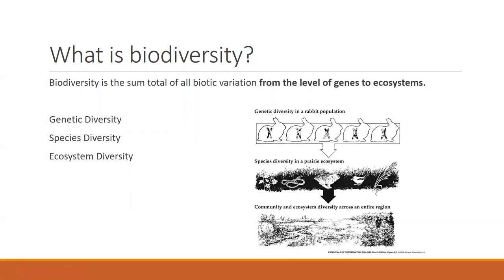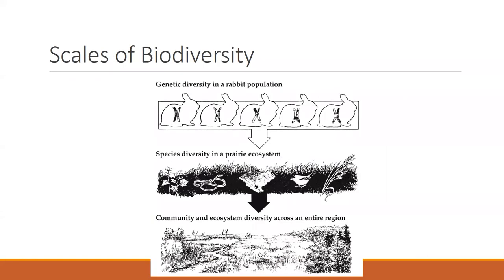A key reason to understand genetic diversity is that we're talking about biosphere integrity — and extinction is heavily contributed to by a decrease in genetic diversity across populations. At the next level we have species diversity in an ecosystem: not only rabbits but birds, snakes, plants, and so on. Then across a region we have community and ecosystem diversity — different communities of organisms and different types of ecosystems across landscapes and bioregions.